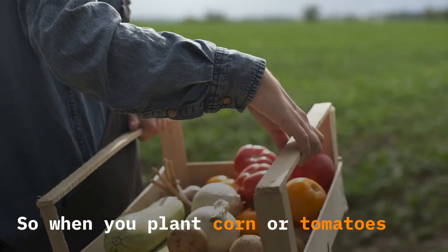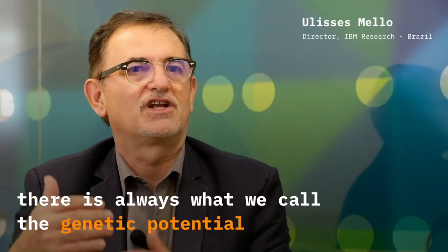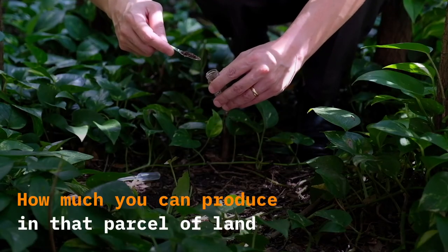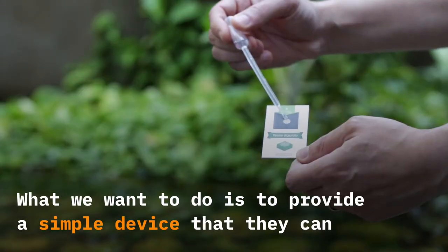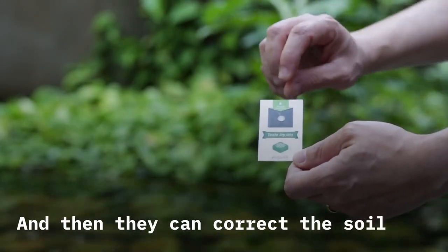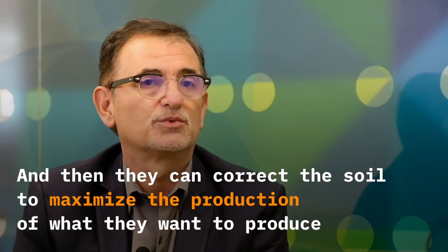When you plant corn or tomatoes, there is always what we call the genetic potential, how much you can produce in that parcel of land. What we want to do is provide a simple device that they can test the soil, and then they can correct the soil to maximize the production of what they want to produce.